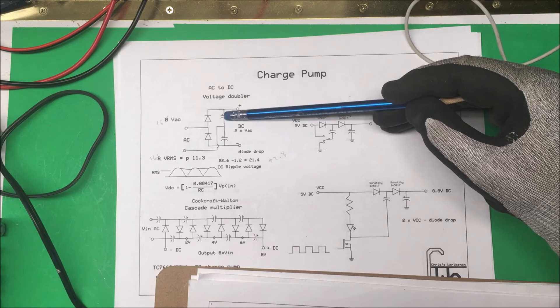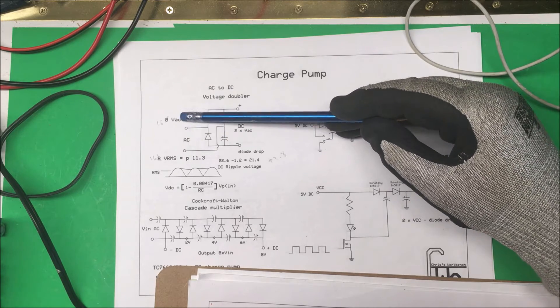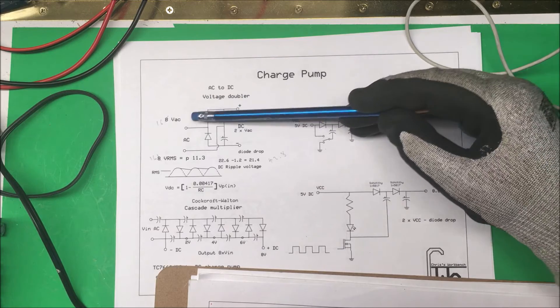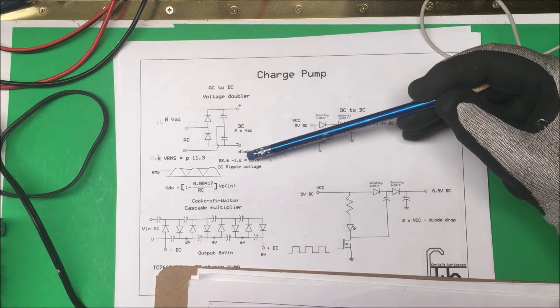The two capacitors are in series with each other and they both charge up to the maximum rectified voltage. So we double that up, we add those two together, and it doubles the voltage on the output.